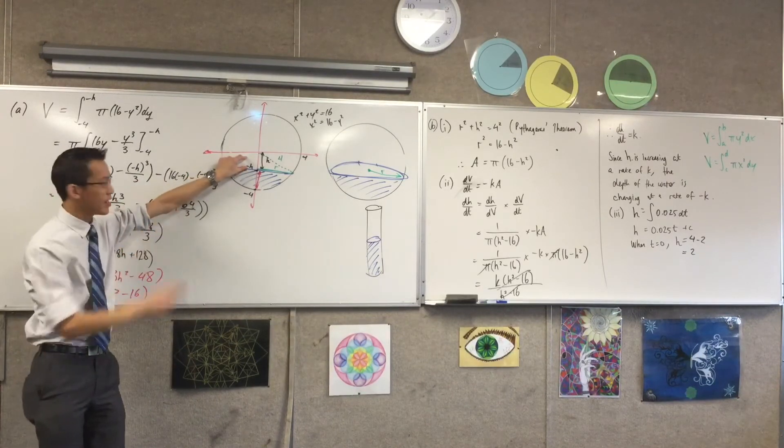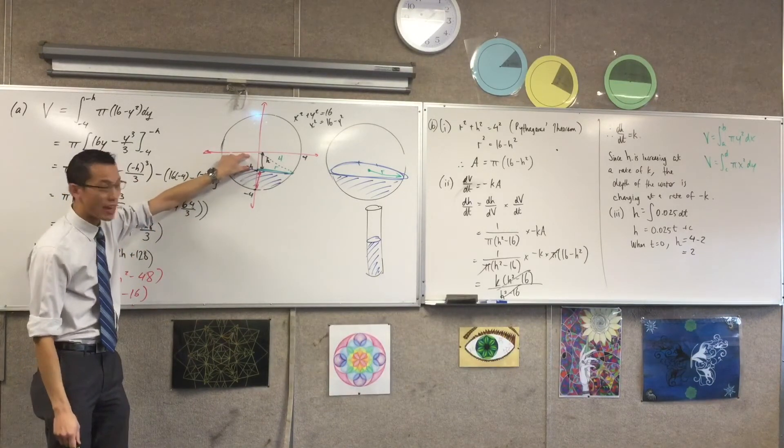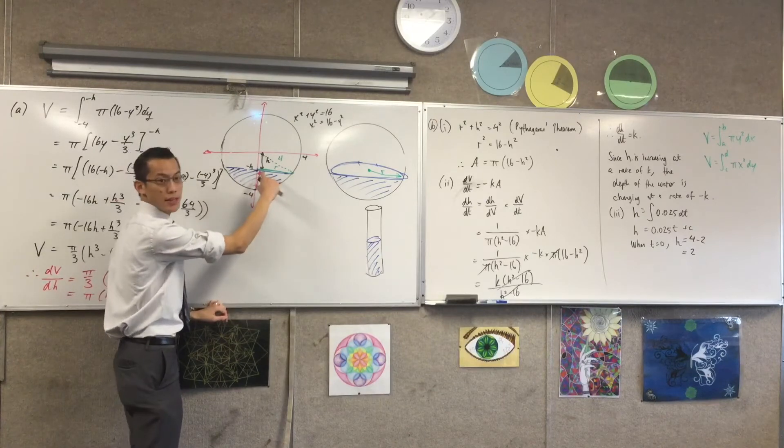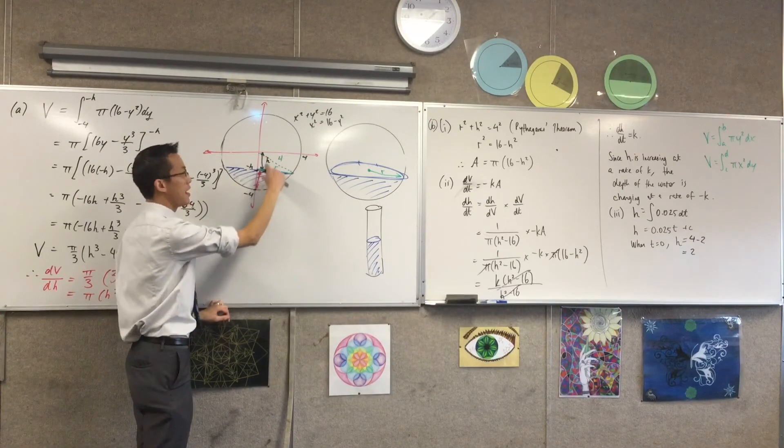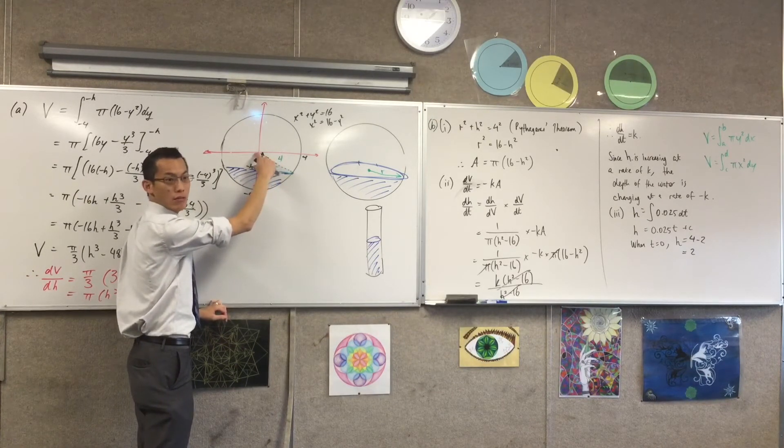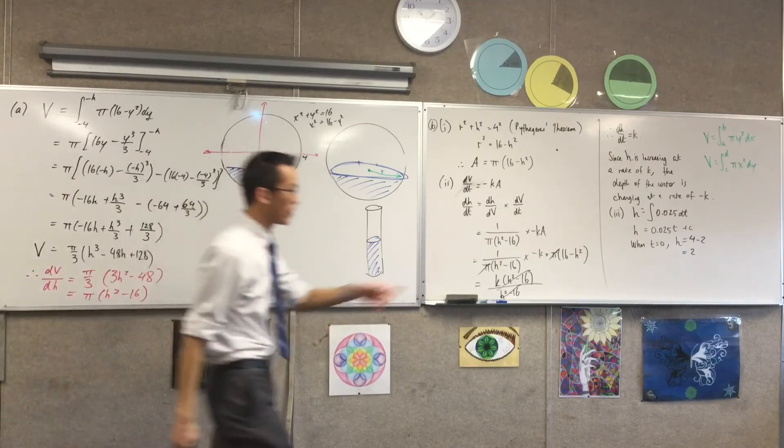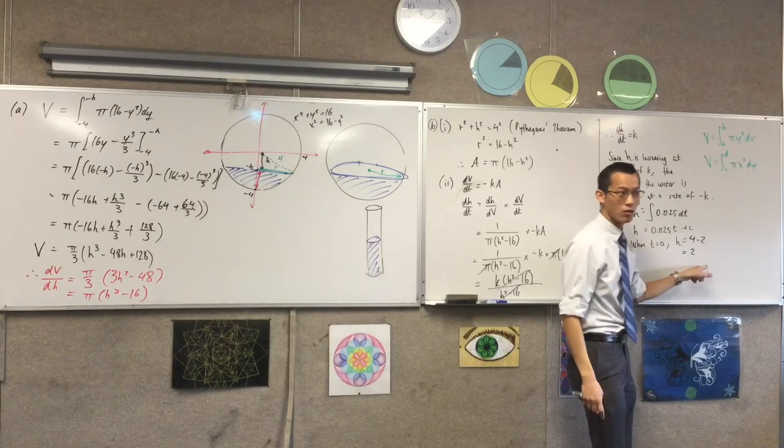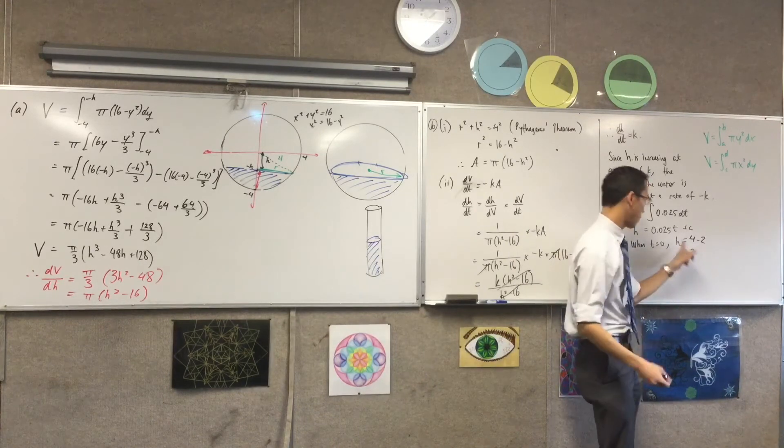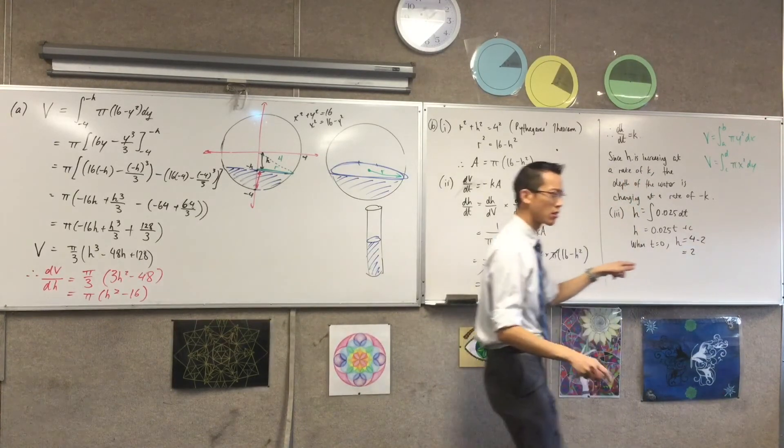So remember, the thing I'm dealing with is h, right? That's this guy up here. So if the depth of this starts at 2, then this must be 4 take away 2, right? So if, for instance, my puddle started at 1 centimeter, when t equals 0, h would not be 1. What would h be? It would be 3. It would be 4 take away 1, right?